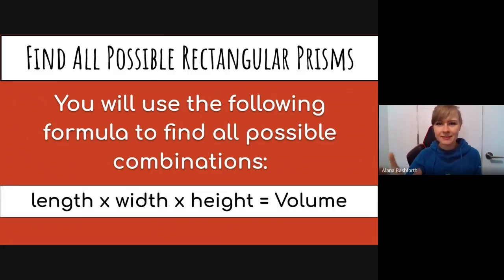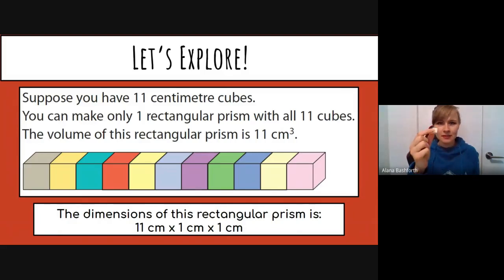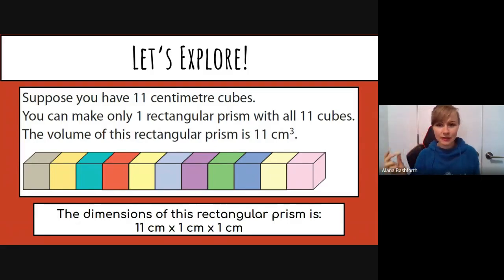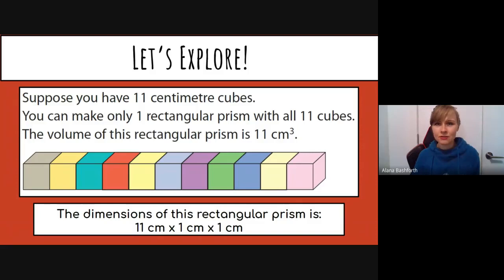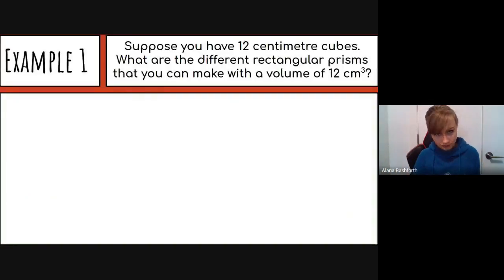Let's explore. Suppose you have 11 centimeter cubes and you need to make a rectangular prism using all of them. On the screen is the only way you could build this one, because the only thing you can multiply to get 11 is 11 itself times 1. So you'd go 11 times 1 times 1 — 11 long, 1 wide, and 1 high.